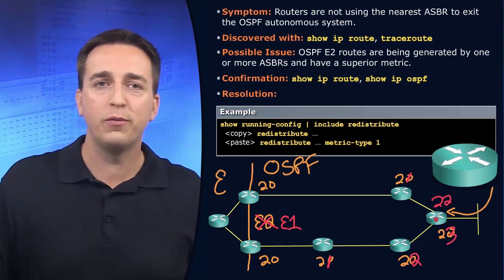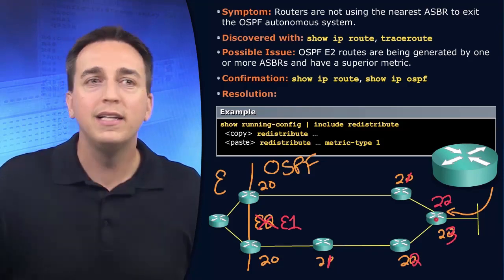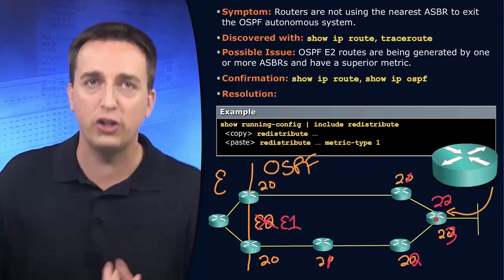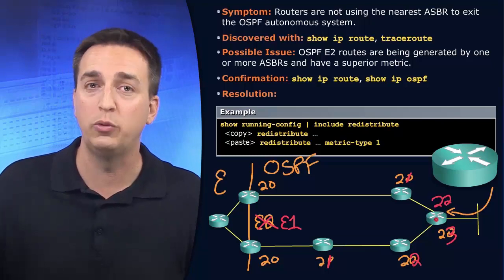Routes are still going to show up in your routing table regardless of whether they're type 1 or type 2. But it's the suboptimal routing issue that you're going to experience from the fact that the wrong ASBR is being used as the exit point.